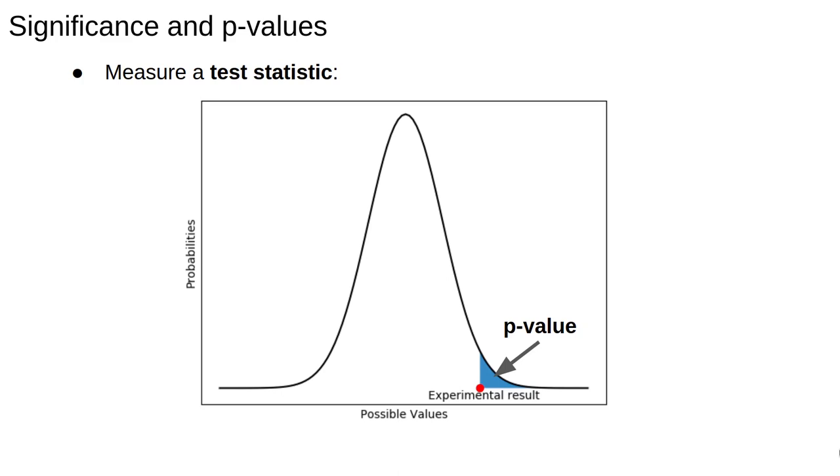If this is confusing, remember that usually small p-values are good. They indicate that something very unusual has happened, which would likely not have occurred if the null were true. Therefore, the null hypothesis is likely false.